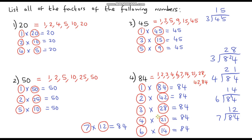So that was quite a long process and it took quite a while. But if we just work systematically — meaning if we start at 1 and just work our way down until we come back on ourselves — we should get all of the factors. This really helps if you know your times tables, but if you don't, you can always use the bus stop method of division to get your factor pairs.